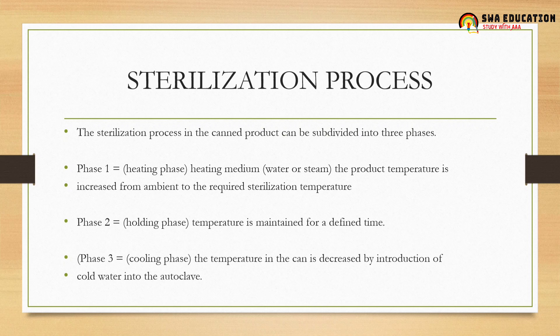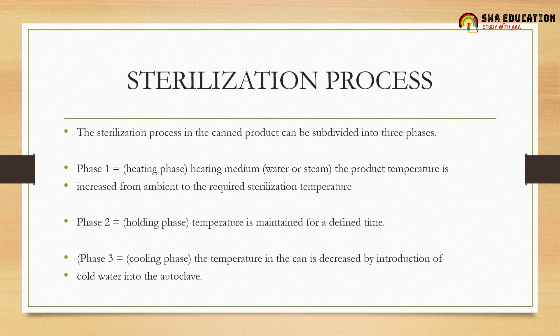The sterilization process in a canned product can be subdivided into three phases. We will cover canning in detail in a later class, but for now we'll focus on the sterilization process involved. Phase one is called the heating phase. The heating medium is either water or steam, and the product temperature is increased from ambient temperature up to the required sterilization temperature.